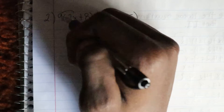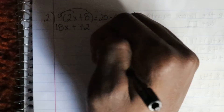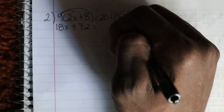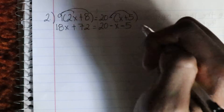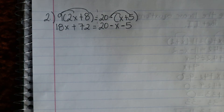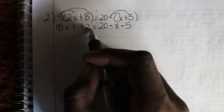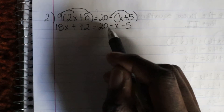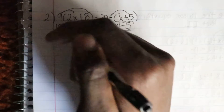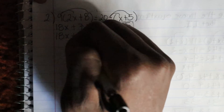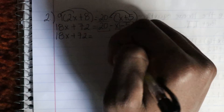So we'll distribute that 9: 9 times 2x gives you 18x, plus 9 times 8 is 72. And then on the other side of the wall, we have a negative, so distribute that: drop the 20, get negative x minus 5. Then we look — we have 3 terms on the left and 3 on the right — so we try to simplify the right side. We have 20 and negative 5, so 20 minus 5 gives us 15. So we get 15 minus x.